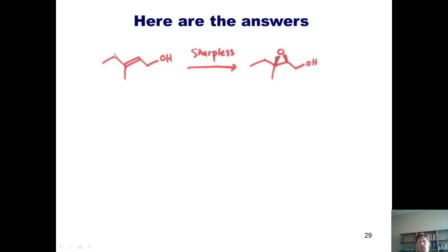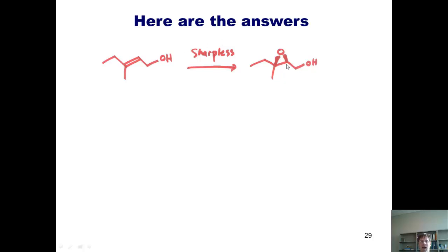So it should be pretty straightforward that we need to treat this allyl alcohol with Sharpless epoxidation conditions. I'm not going to require you to know which enantiomer or diastereomer of DET to use — minus or plus — in order to get which enantiomer of the epoxide. I just want you to memorize that if I take an allyl alcohol and treat it under the proper Sharpless conditions, I can generate either enantiomer of epoxide according to my desires.